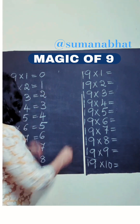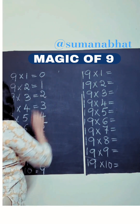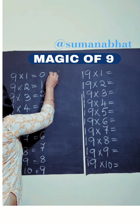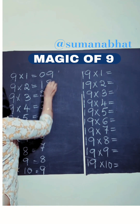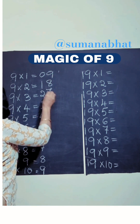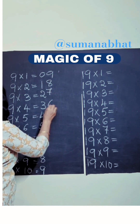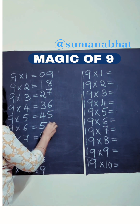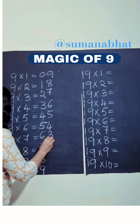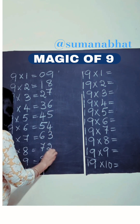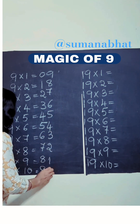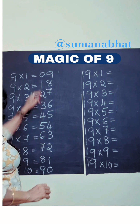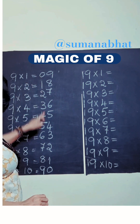And next to this, write the numbers in a descending ladder: 9, 8, 7, 6, 5, 4, 3, 2, 1, and 0. The 9 times tables are complete.